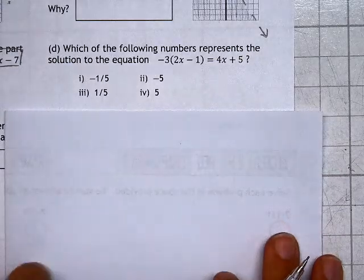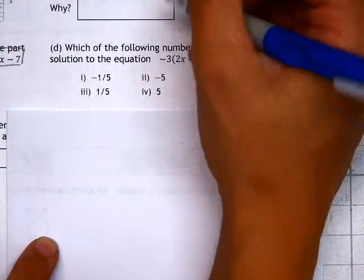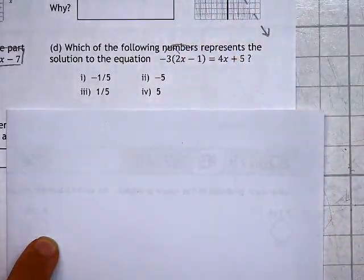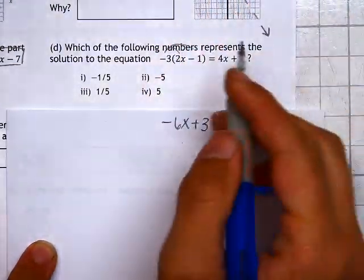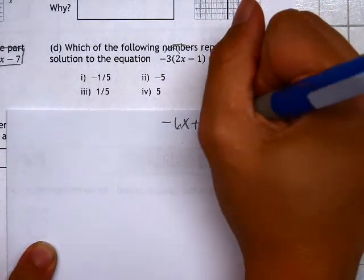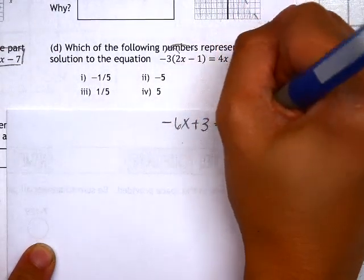The first thing we'll do in this equation to make it easier to solve is to distribute that negative 3 to both terms inside the parentheses. That would give us negative 6x plus 3. Remember, negative times a negative is a positive, equals 4x plus 5.